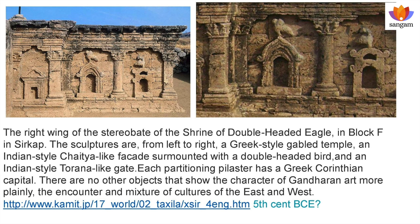The same double-headed eagle appears in Akshashila, Sirkap. The right wing of the shrine of the double-headed eagle in block F of Sirkap shows sculptures from left to right: a Greek-style Gabriel temple, an Indian-style Chaitya-like facade surmounted with a double-headed eagle bird, and an Indian-style Torana-like gate — each with a Greek Corinthian capital. This plainly shows the encounter and mixture of cultures of East and West. There is a magnificent Stupa Eagle Temple, Ganda Bheerunda, Siyana Chiti Siyana — a very major wealth contributor to the wealth of Bharatam, because the richest iron ore in the world — magnetite and hematite — come from India.